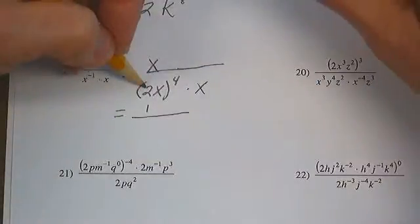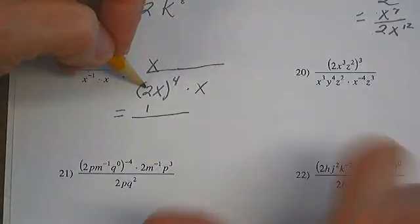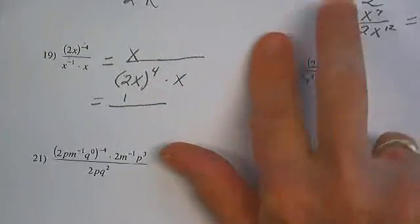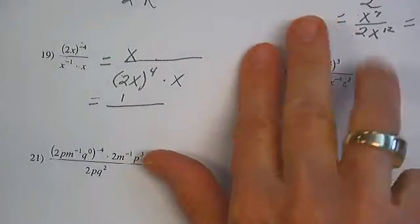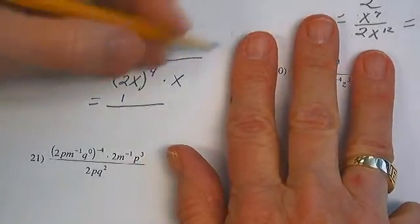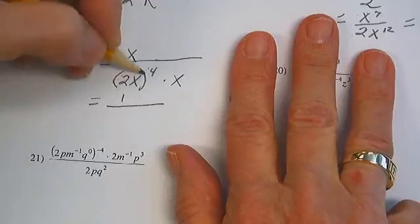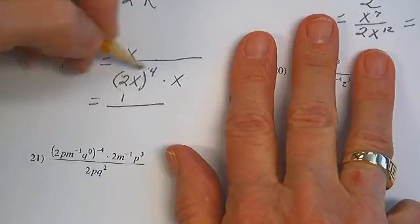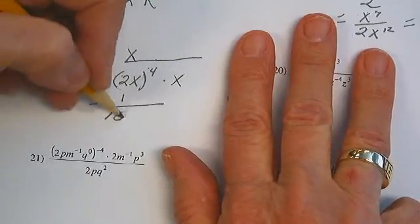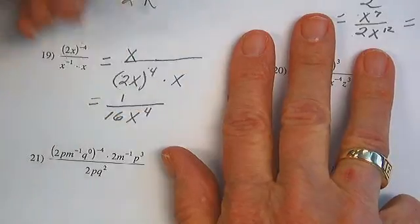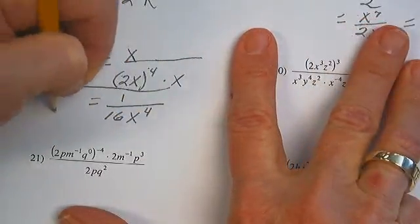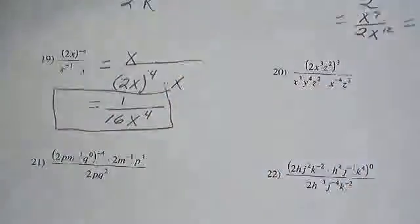So that gives me 1 over 2 to the 4th — well, 2 times 2 is 4, times 2 is 8, times 2 is 16. So 2 to the 4th power — remember, the exponent distributes when you have parentheses — gives us 16x to the 4th. And that, ladies and gentlemen, is our final answer for number 19.